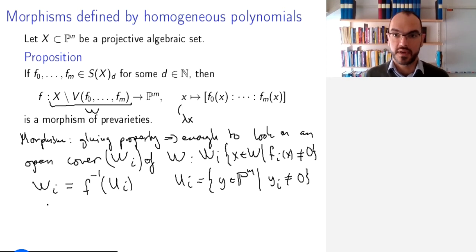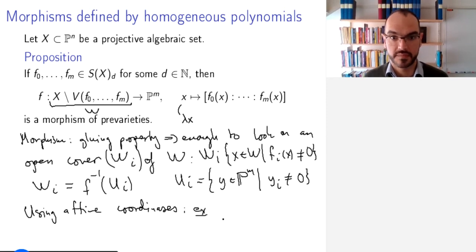And on these Wᵢ, what does this f look like? Well, using affine coordinates, f on Wᵢ will have the following shape. It will map a point x to the point